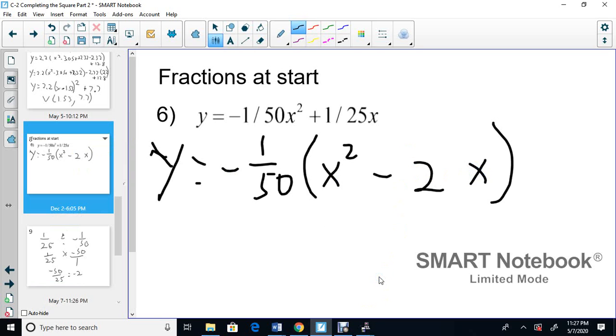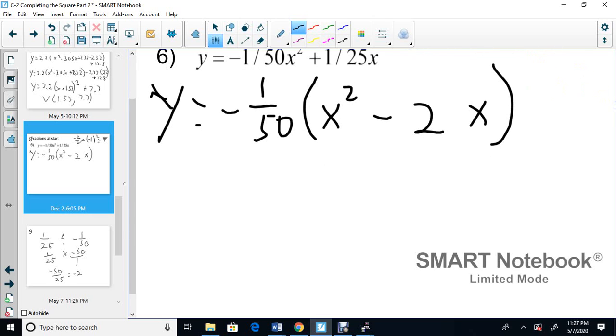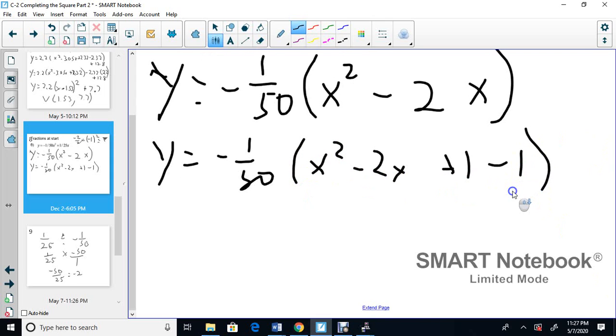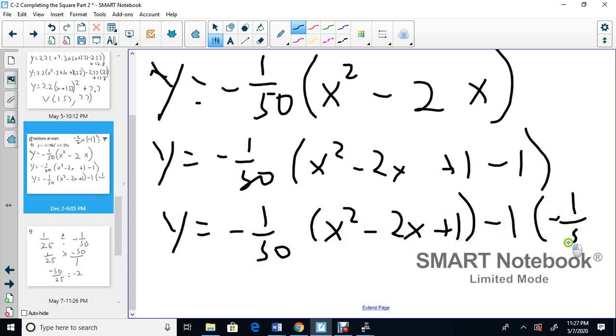Now, you take the negative 2 divided by 2 and you get negative 1, and then you square it and you get 1. So we're going to plus and minus 1. So here, y equals negative 1 over 50, x squared minus 2x, plus 1, minus 1. Now we're going to take the minus 1 out. So we'll go y equals negative 1 over 50, x squared minus 2x, plus 1. We take the minus 1 out and we multiply by what's in the front, which is minus 1/50.